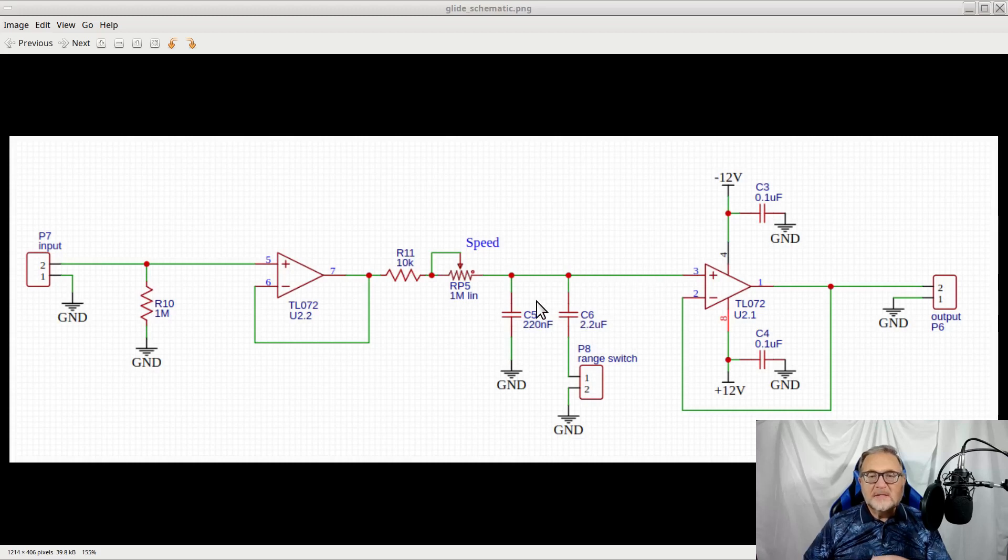Whenever C5 and C6 are at a voltage lower than the input signal, they will start charging, and the output voltage will gradually increase from the current value of the capacitors to the new value of the input signal, within a time that depends on the RC value.